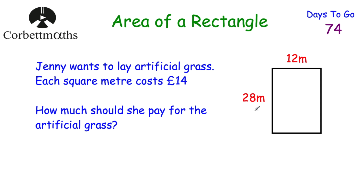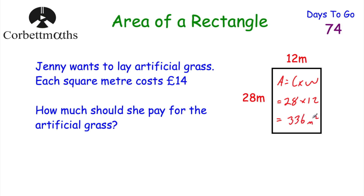Her garden is a rectangle with a length of 28 metres and a width of 12 metres. We first find the area: length multiplied by width, so 28 multiplied by 12, which equals 336 square metres. So the area of Jenny's garden is 336 square metres.